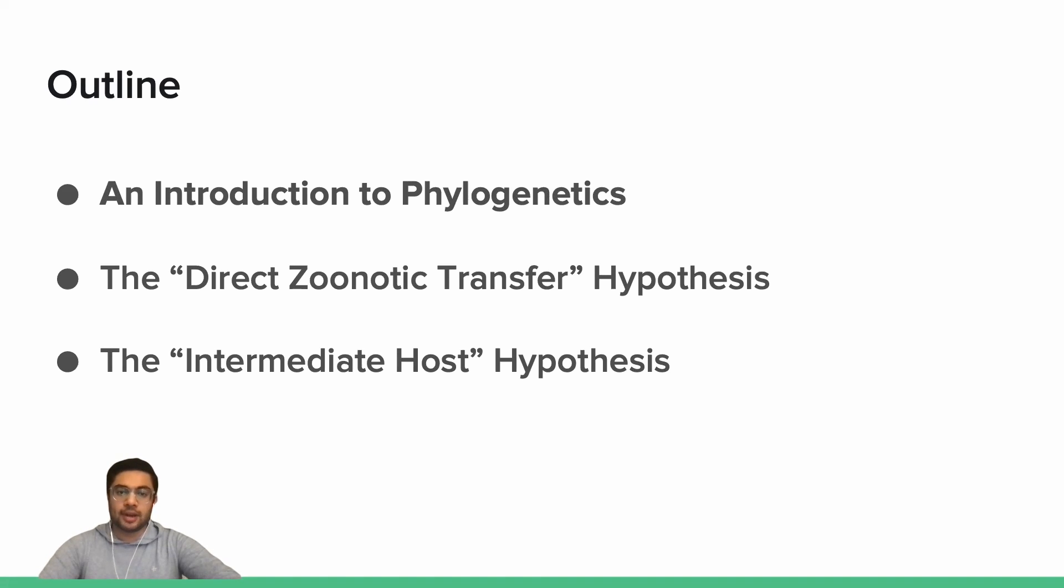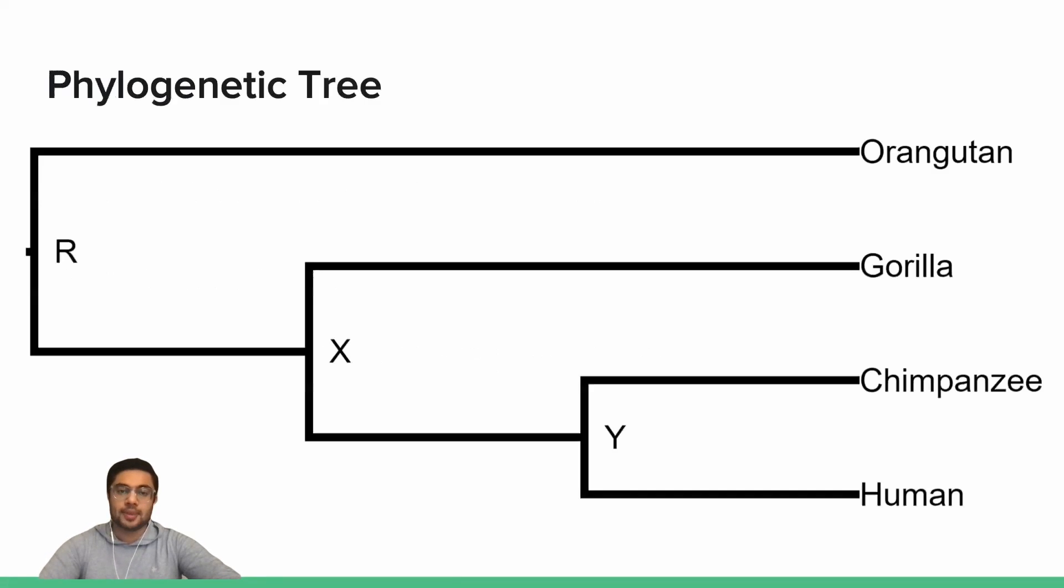To help us explore that question, we will turn to the field of phylogenetics, the study of finding evolutionary relationships between organisms. The basic principles of phylogenetics can be modeled by the intuitive diagram shown here, which is called a phylogenetic tree, or phylogeny, the formal term for an evolutionary tree.